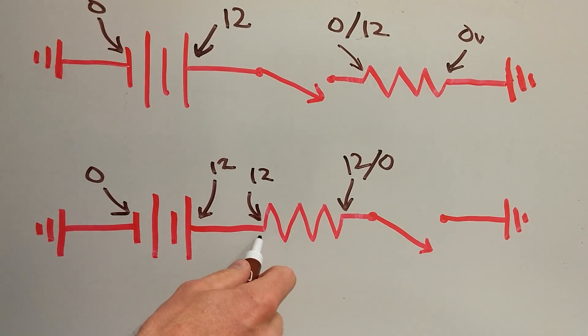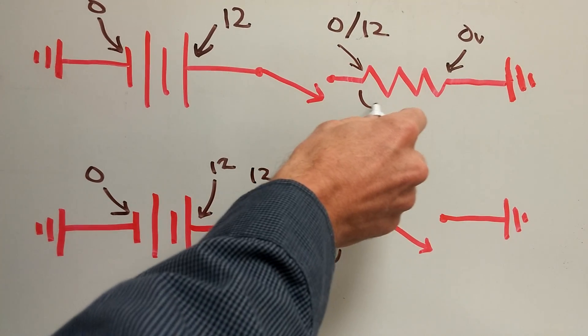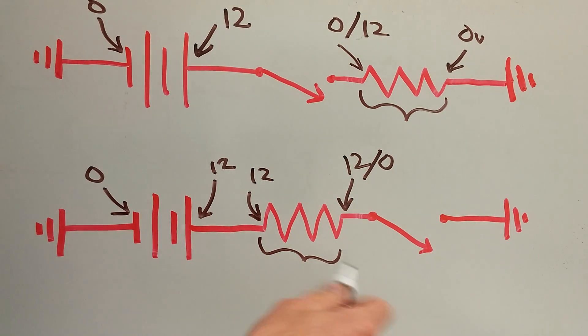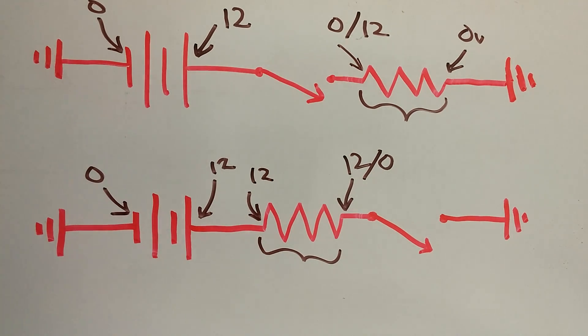I don't know if that makes sense, but hopefully that clarifies something that's confusing to a lot of people. When the switch is closed, all of the voltage should be dropped across the resistor. It should be 12 volts difference from one side to the other. However, when the switch is open, no voltage is dropped. So you'll have the same voltage on both sides of the resistor.